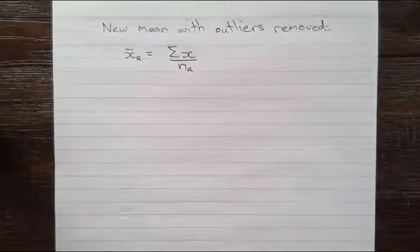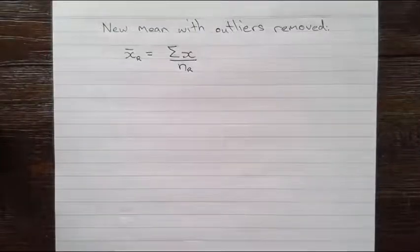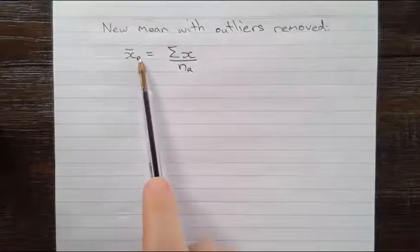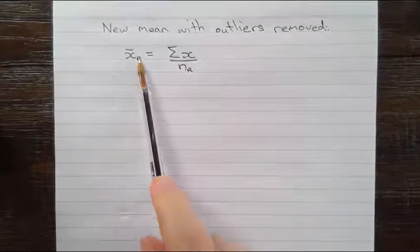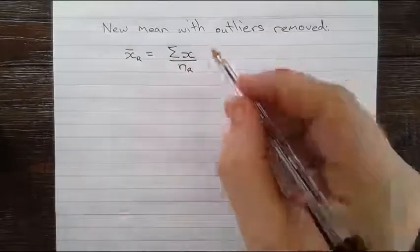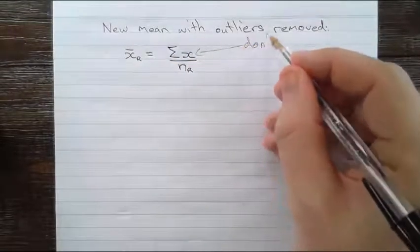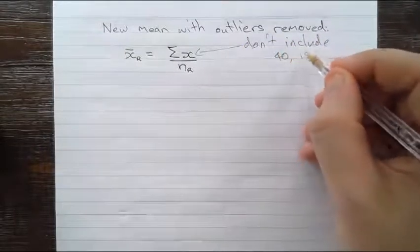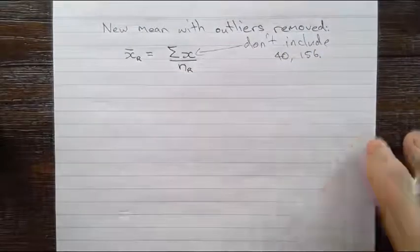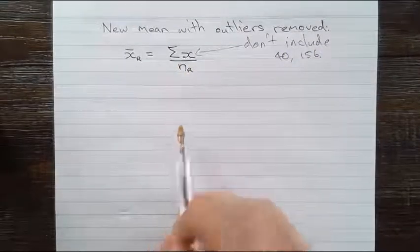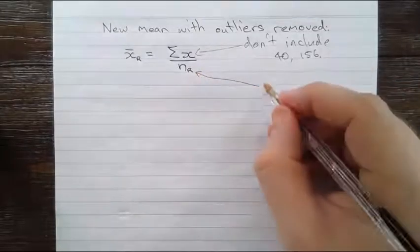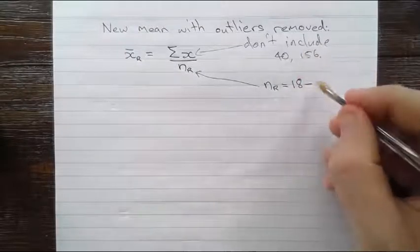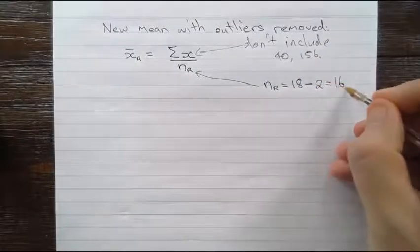Now continuing on with the question, we were asked to look at what is the new mean when the outliers are removed. So it's essentially the same calculation. I'm going to call it x̄ with a little r, meaning removed outliers. And it's still the sum of the x's, but we need to remember that we don't include those two outlier values, so don't include the 40 or the 156. And we notice that we do have a different n value on the bottom, nr, again meaning with the outliers removed. So nr will be the original n value, which was 18, take away the number of outliers, which is 2. So we should have 16 on the bottom there.